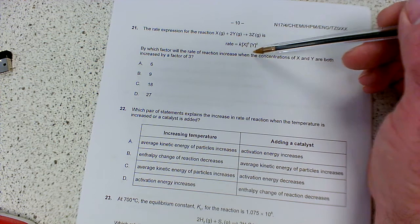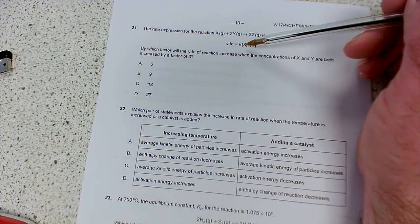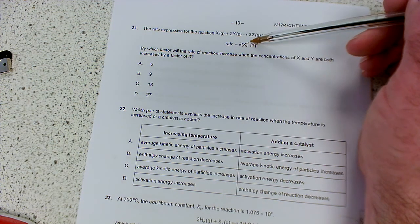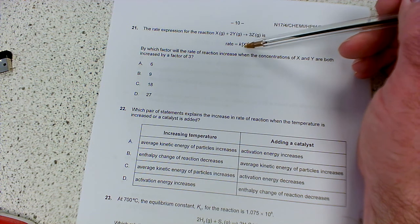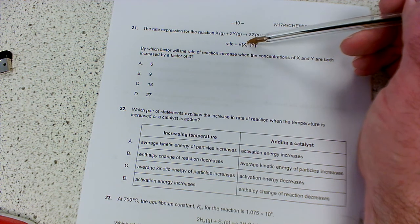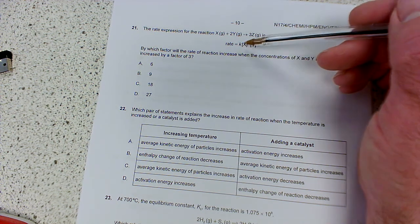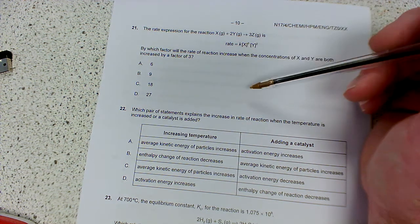By which factor will the rate of reaction increase when the concentrations of X and Y are both increased by a factor of 3? So anything to the power 0 is 1. So the fact that the concentration of X goes up by 3 is going to have no effect on the rate because it's 0 order. So X doesn't affect the rate. The reactant, that chemical, must appear after the rate determining step.